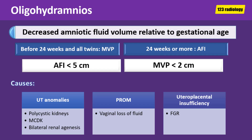There are essentially three major causes of oligohydramnios. The first is urinary tract anomalies, such as bilateral renal agenesis, multicystic or polycystic kidneys. The second cause is preterm rupture of the membranes. And the third cause is uteroplacental insufficiency.